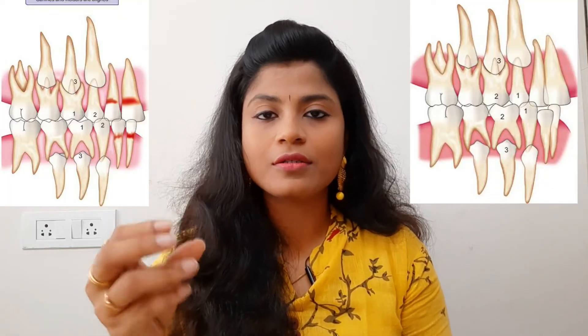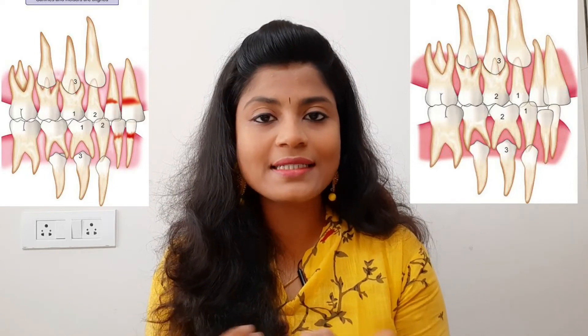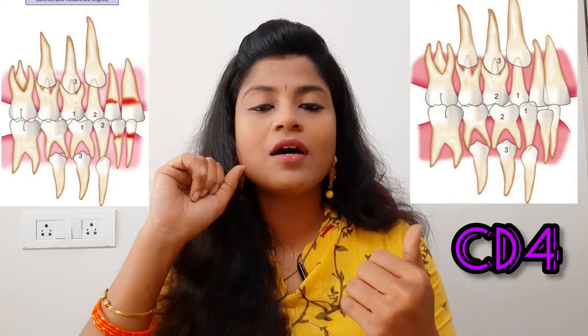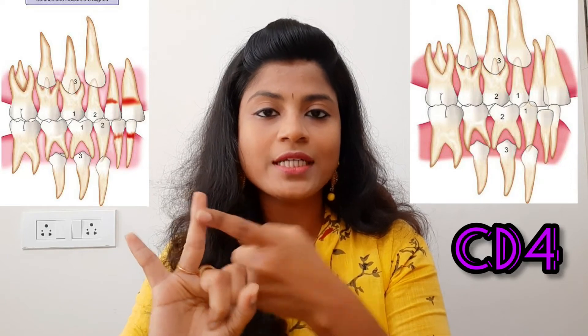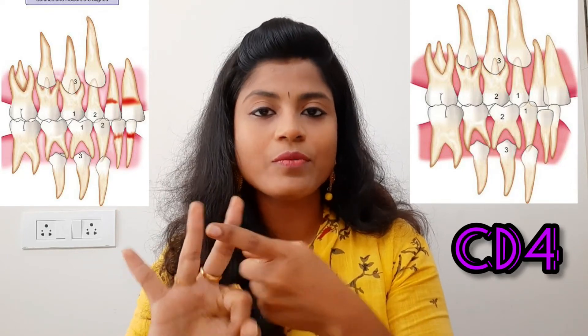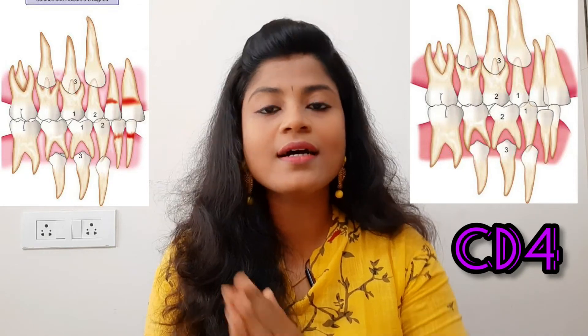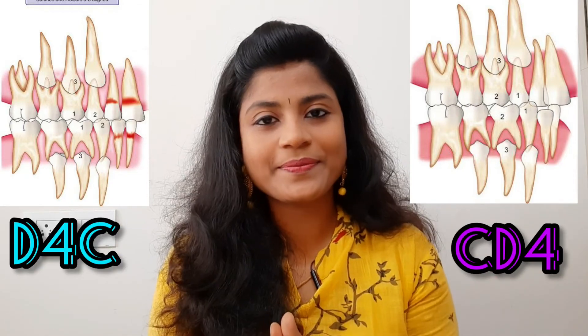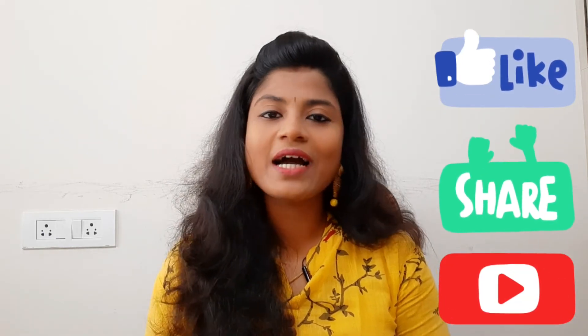There is a shorter way to remember the extraction sequences using tooth notation. The deciduous canine is noted as C, the deciduous first molar as D, and the permanent first premolar as 4. In Dwell's method, the sequence is C, D, 4 — canine first, then deciduous molar, then premolar. For Tweed's and Nance's method, the sequence is D, 4, C. If you like this video please like, share, and subscribe to the channel — we have many more videos to come.